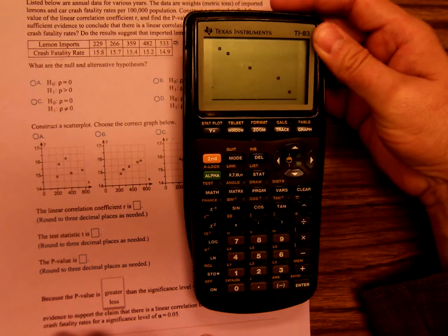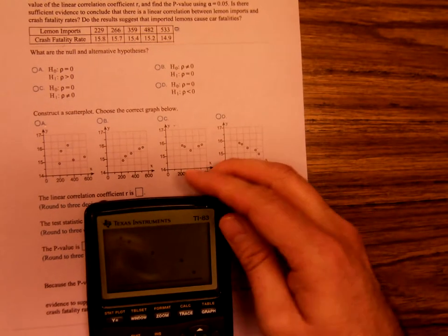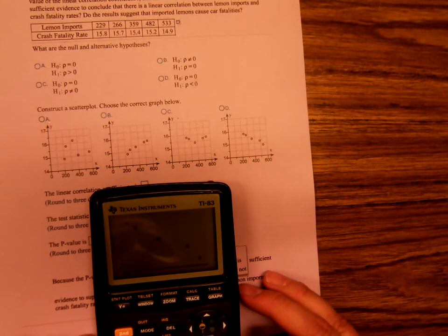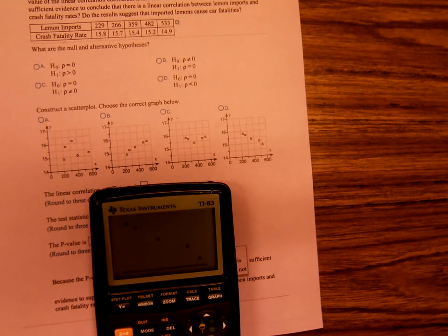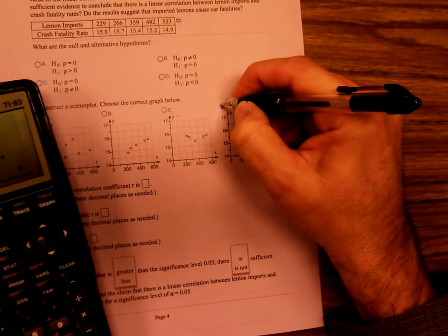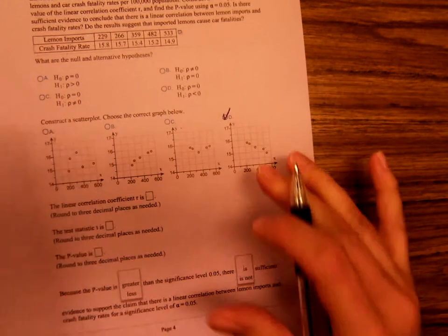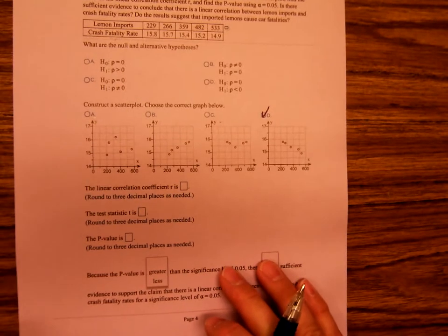And you'll see that. So let me look at my answer choices. Oh, this would be D. You know what? I think I forgot to do A, didn't I? For the null and alternative hypotheses here.